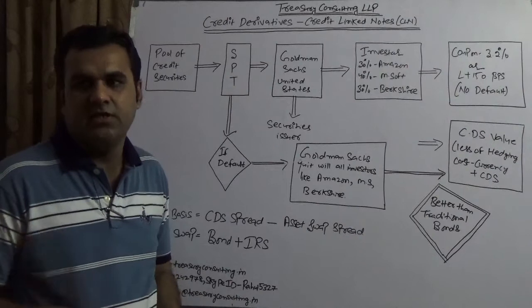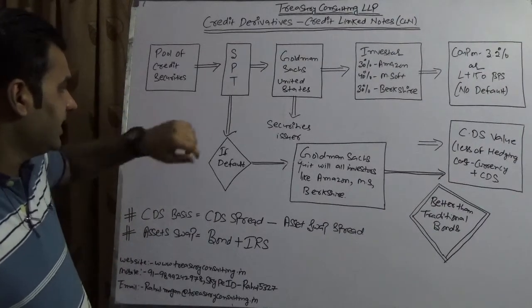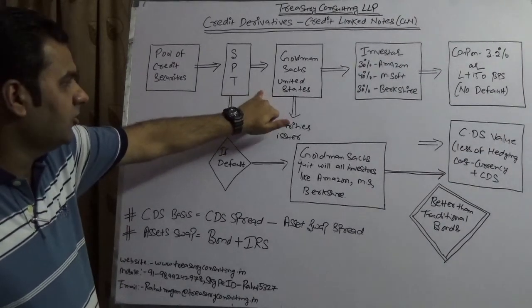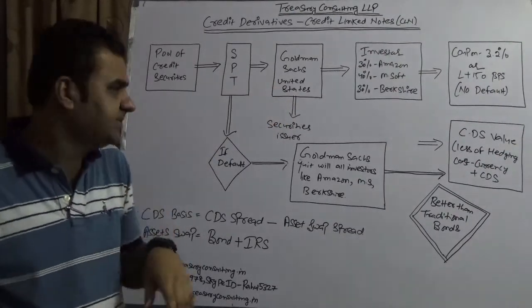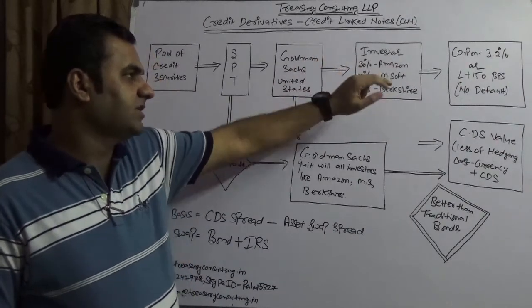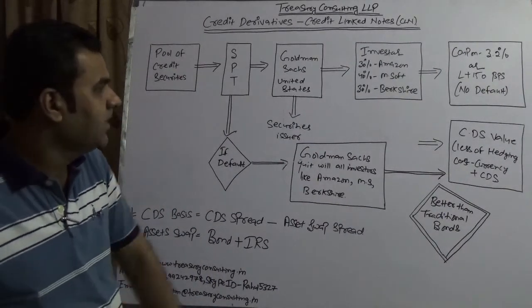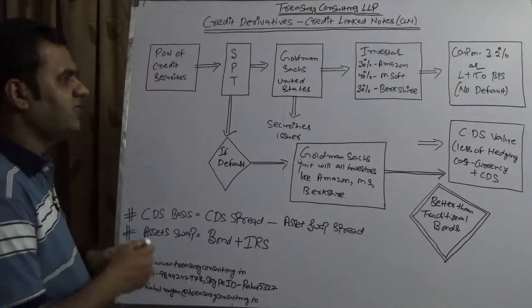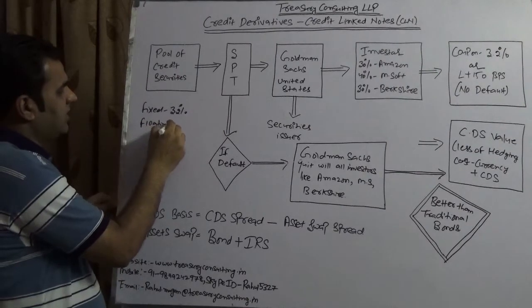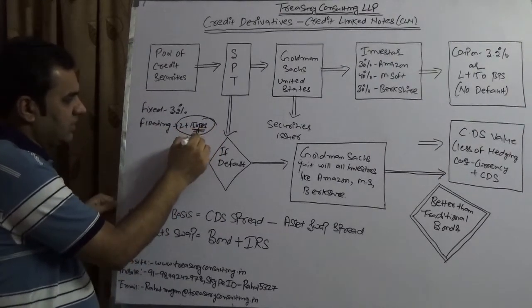That pool of credit securities forms an SPT — a Special Purpose Trust. Similar to an SPC (Special Purpose Company) or SPV (Special Purpose Vehicle), here we have a Special Purpose Trust. That trust is owned by Goldman Sachs, United States. Goldman Sachs offloads it to investors — 30% subscribed by Amazon, 40% by Microsoft, and 30% by Berkshire Hathaway, owned by Warren Buffett. They offer two types of coupon: fixed at 3.2%, or floating.